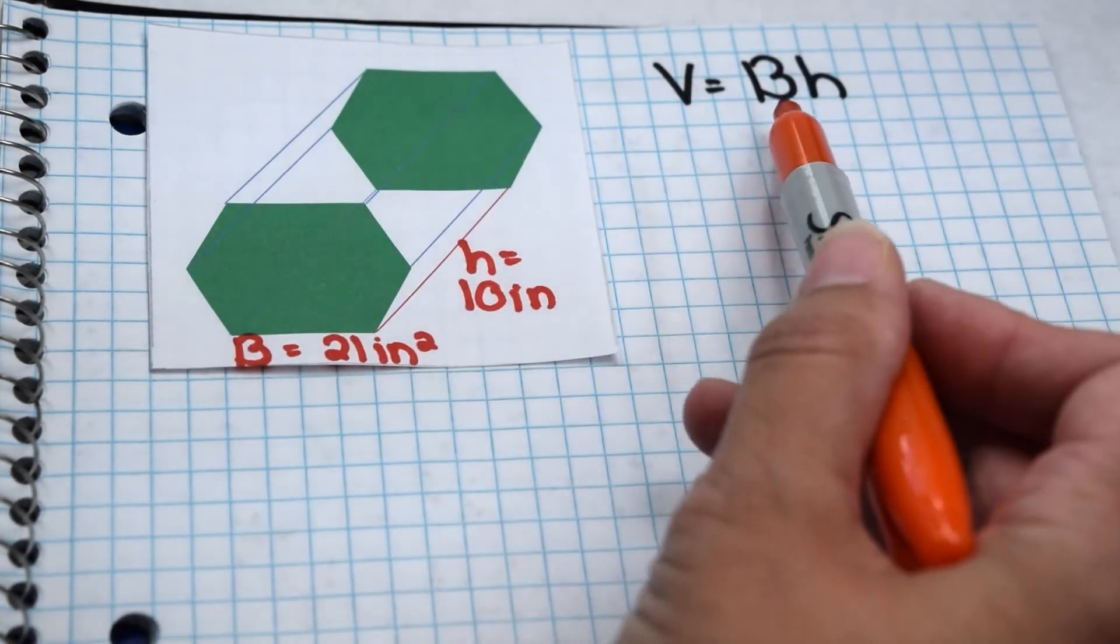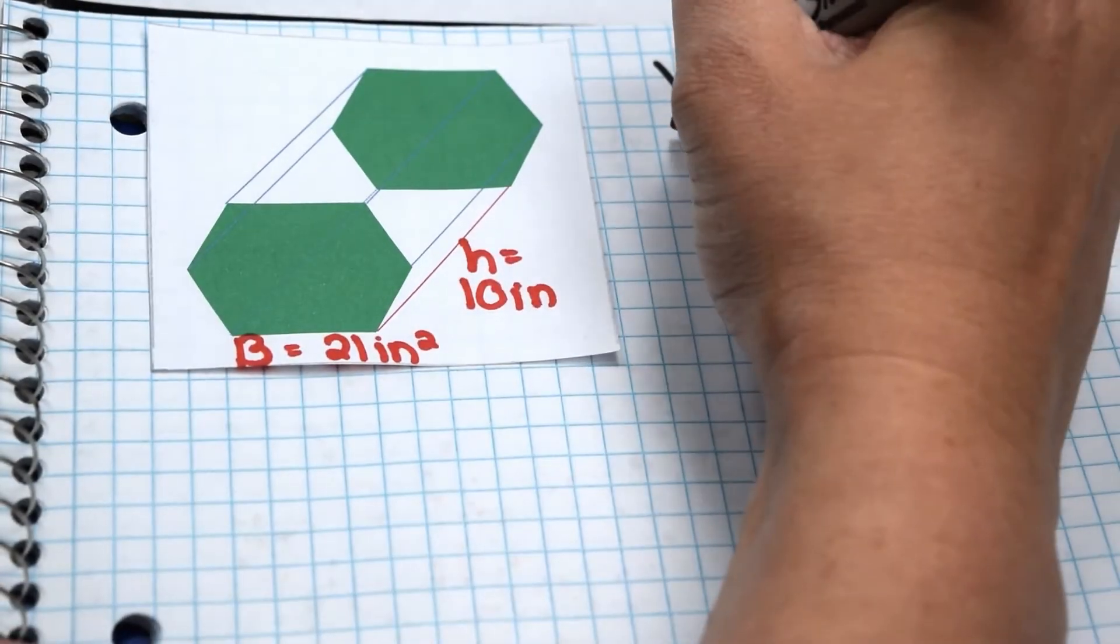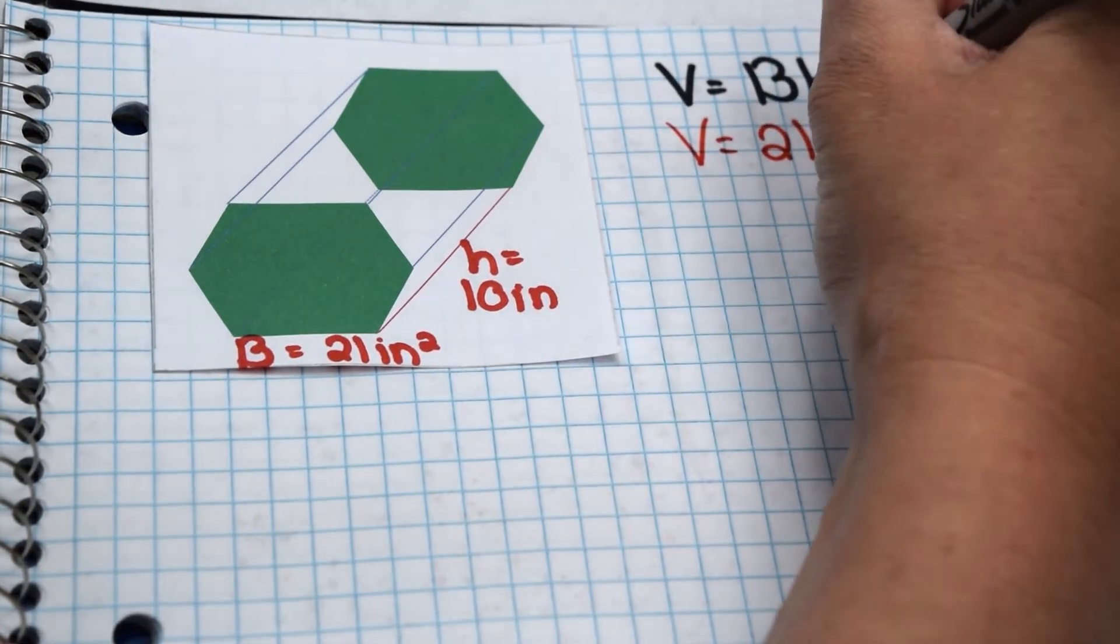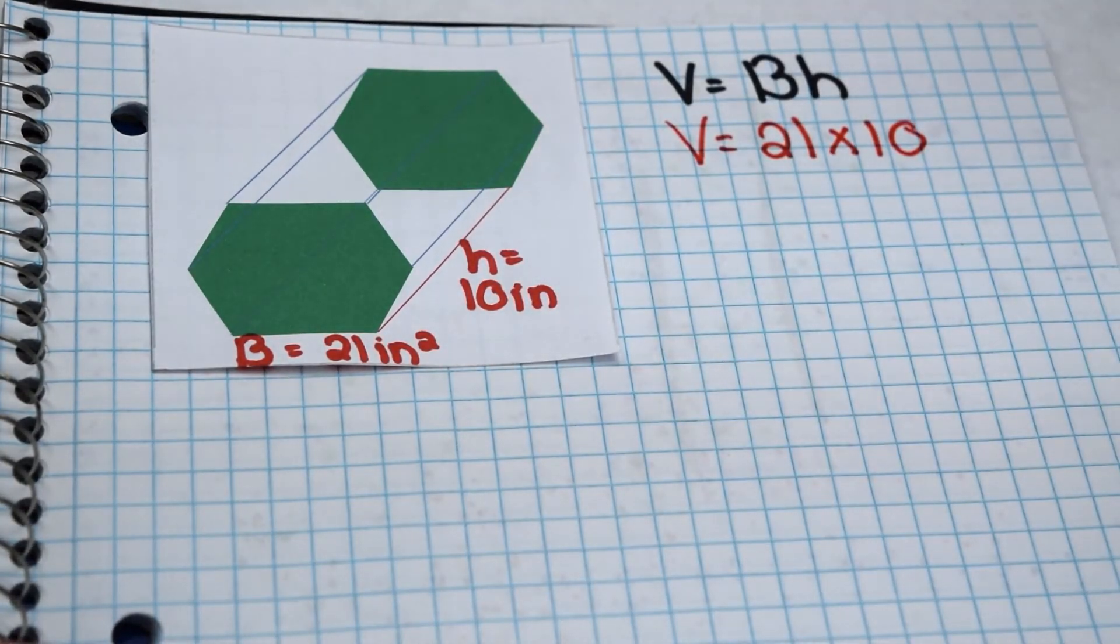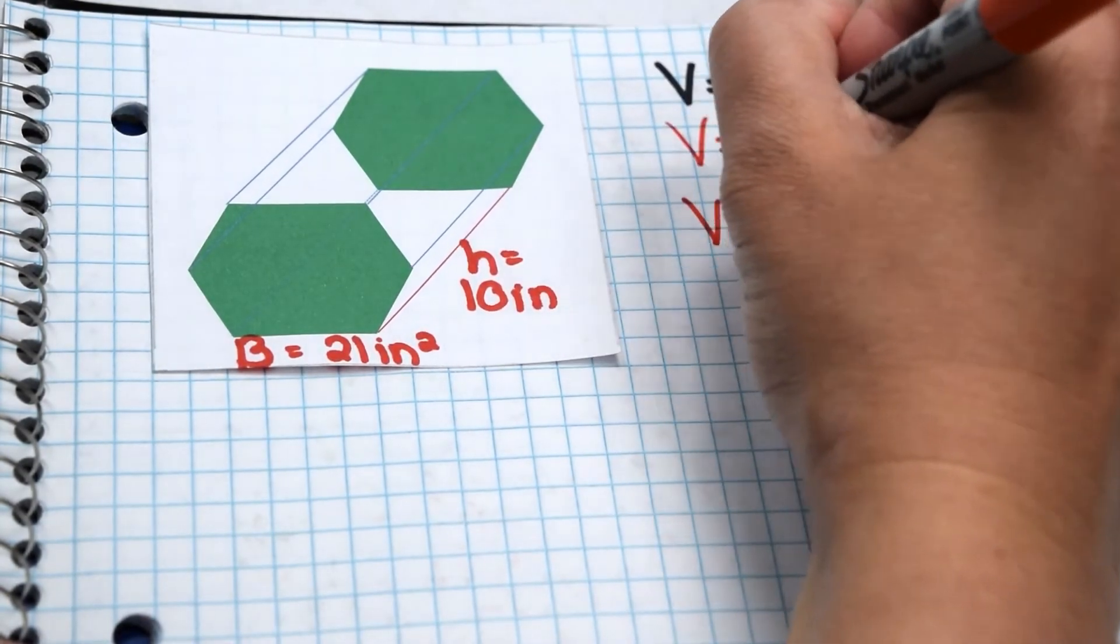So that means we don't have to compute area of the base. We simply have to substitute it into our equation. So our equation is now going to read 21 for area of the base times 10 for the height. 21 times 10 gives us 210.